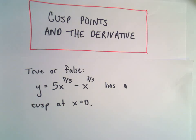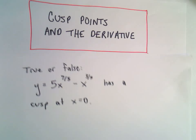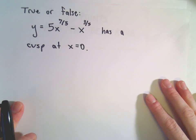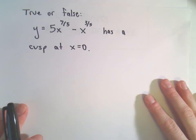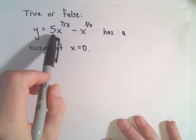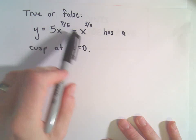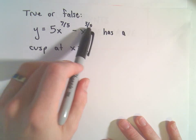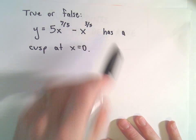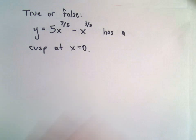In this video we're going to look at addressing the following true or false question: does the function y equals 5x to the 7/5 minus x to the 3/5 have a cusp at x equals 0?